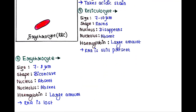Next is the erythrocyte, or RBC — red blood cell. Size: 7 to 8 micrometers, smaller than the reticulocyte. The shape is biconcave. Nucleus: absent. Nucleolus: absent. Hemoglobin: large amount. RNA is lost in this cell.